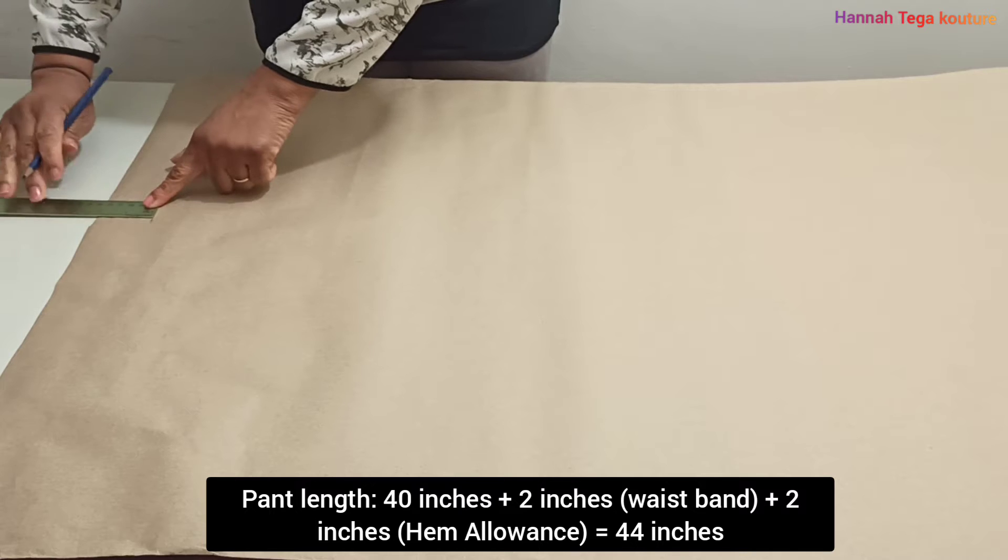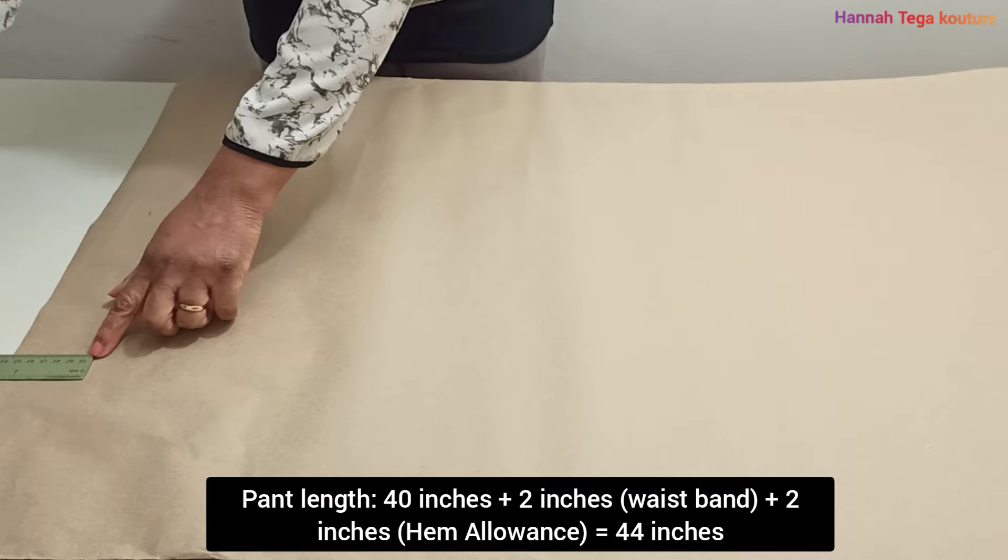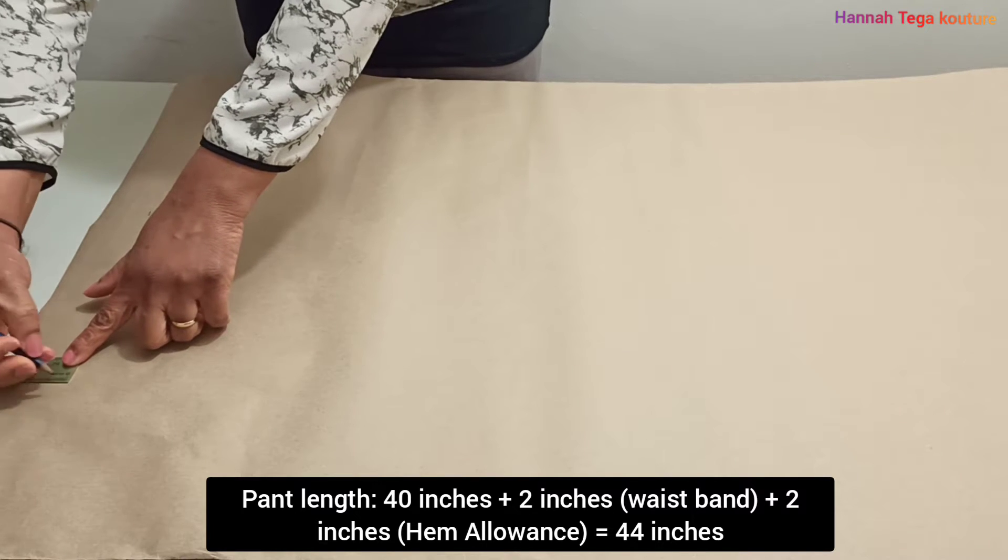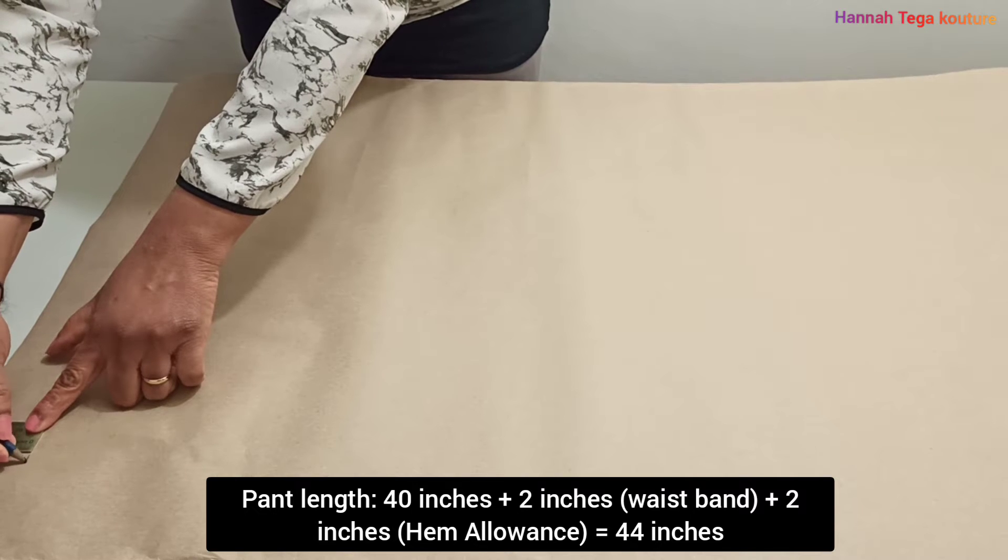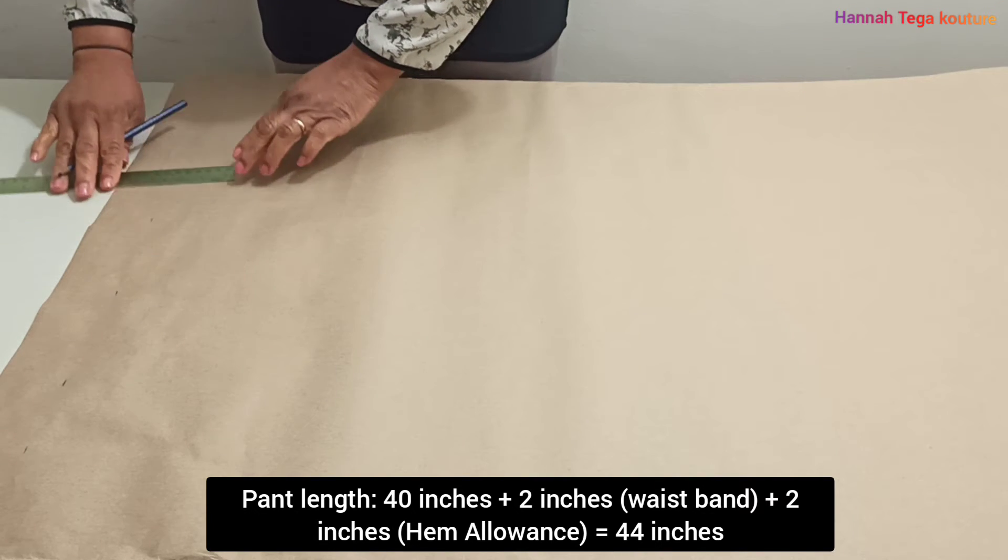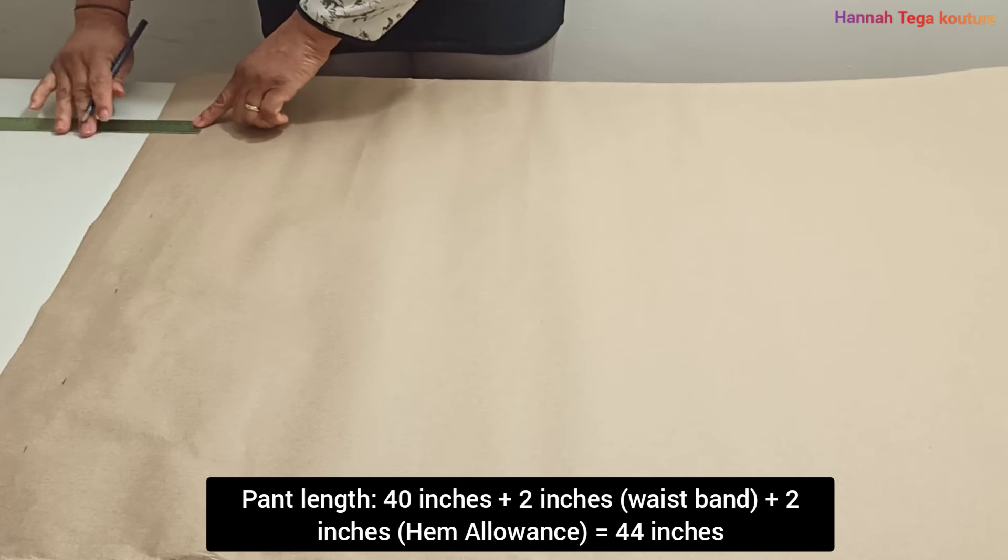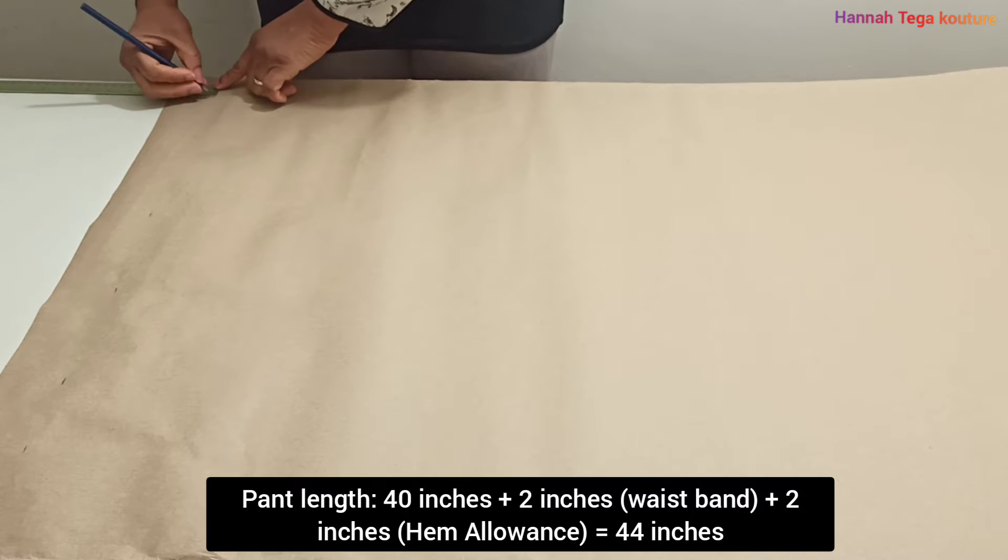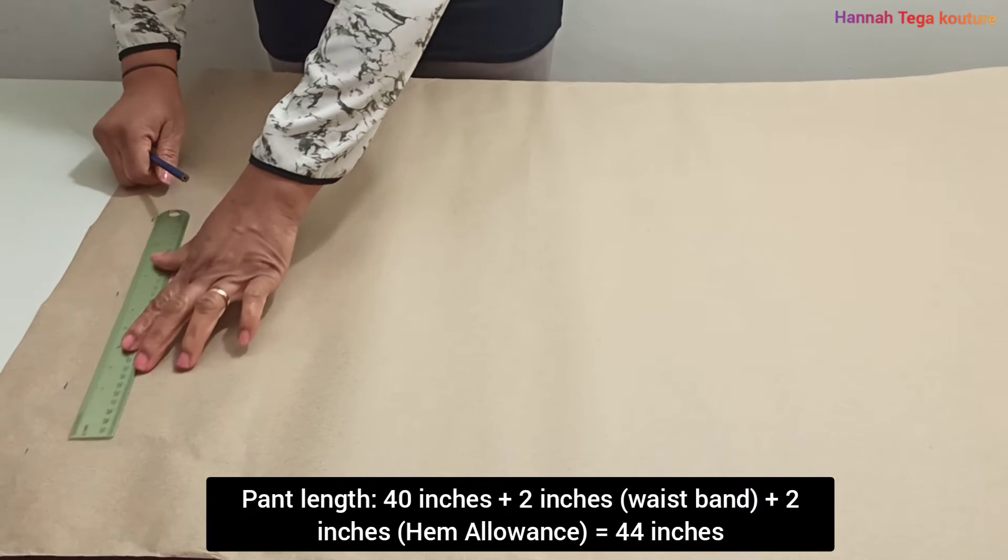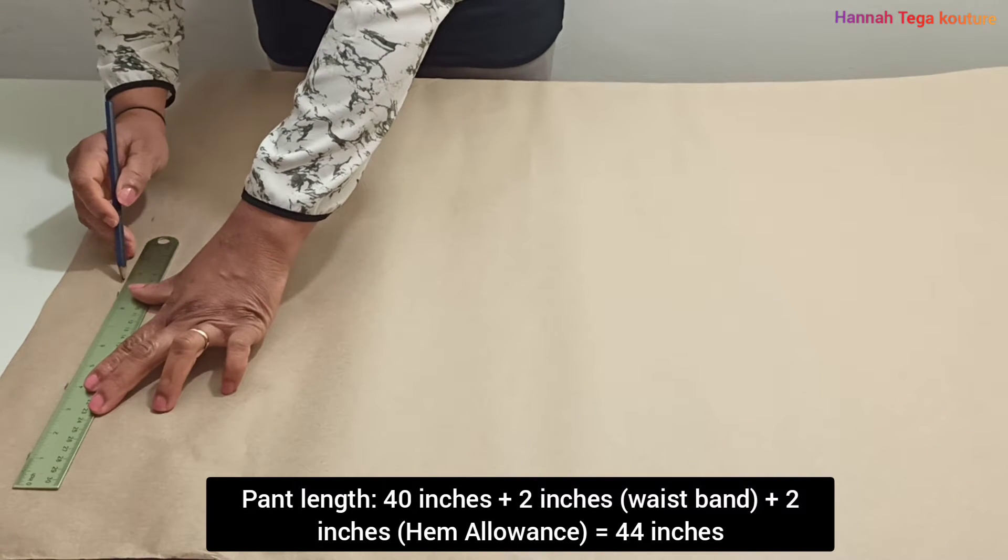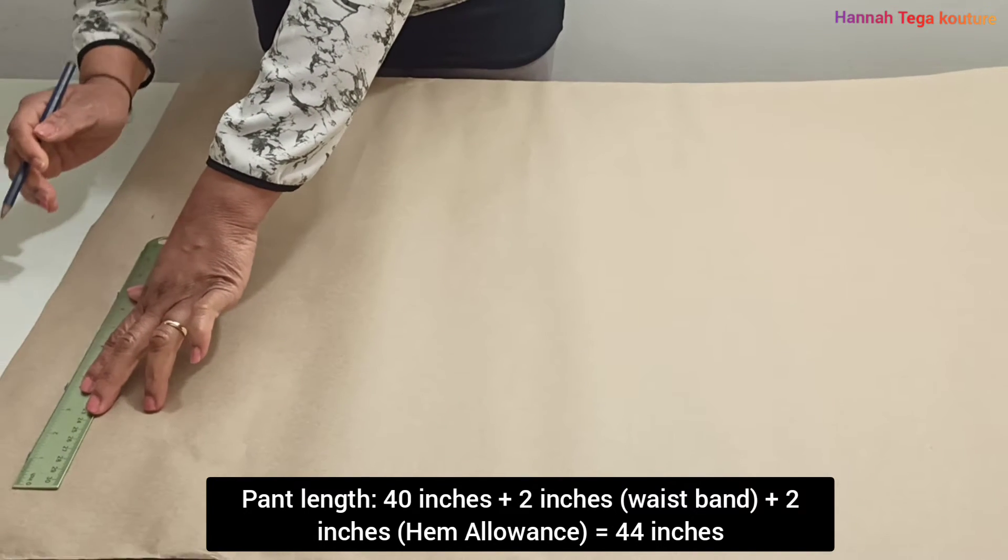Then rule a line to connect the markings together. For this pant we don't really need any waist measurement. The measurement for the waist is taken from the tie measurement - it determines what the waist is going to be. So we're going with the waist, the crotch, the tie measurement, then the length of the pant itself. Only that, nothing more than that.